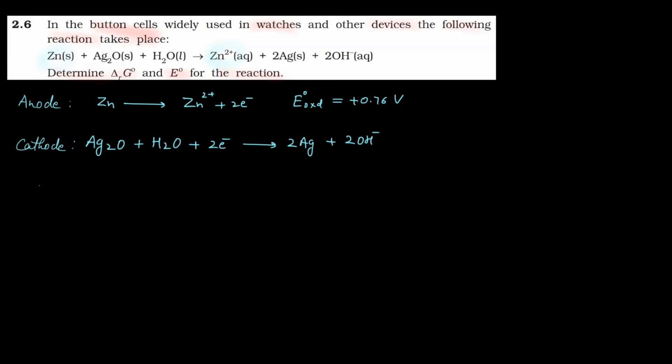Now you have to calculate E° cell. E° cell is calculated from E° right minus E° left, or we say E° of cathode minus E° of anode.